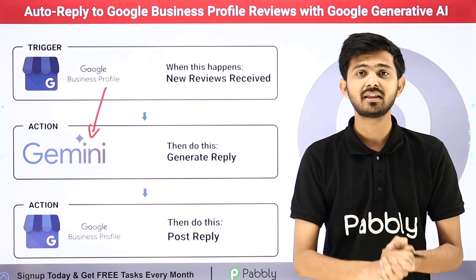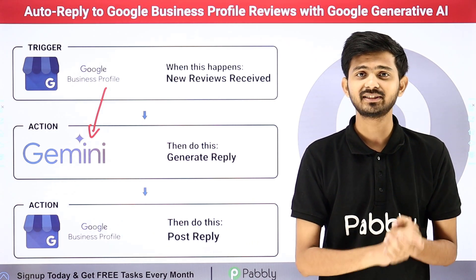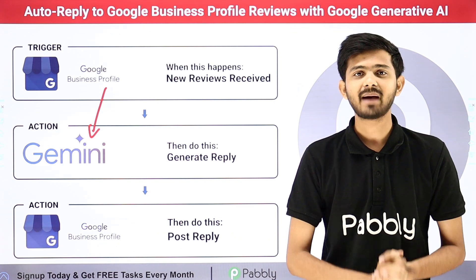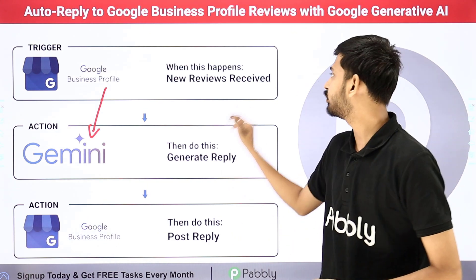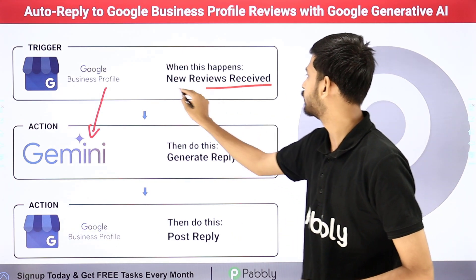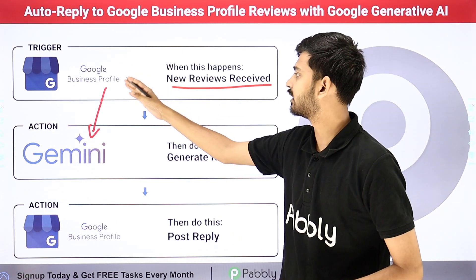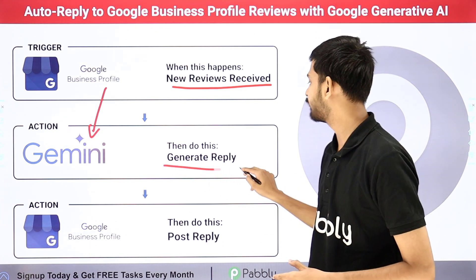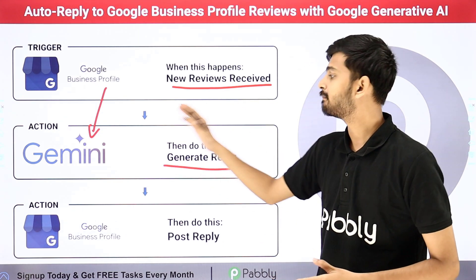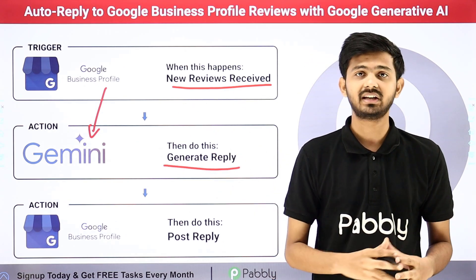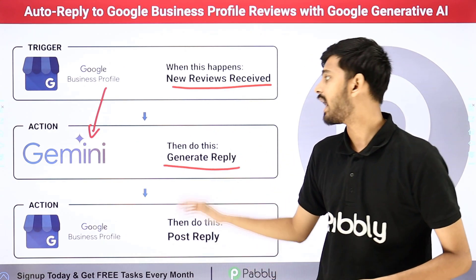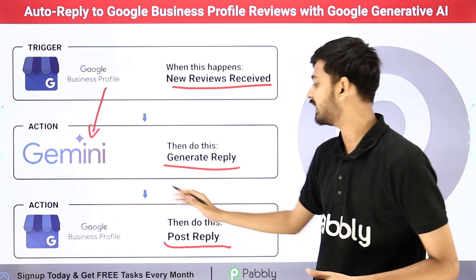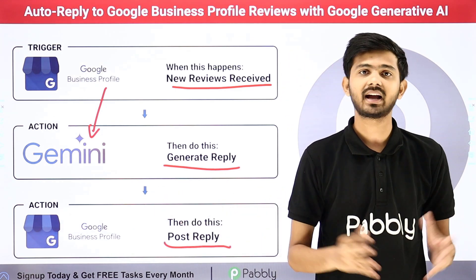Pabbly Connect is an amazing software for automation and integration. As I receive a new review from Google Business Profile, I'll automatically generate a reply using Google Generative AI and post that automatically to my Google Business Profile account.